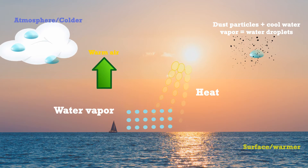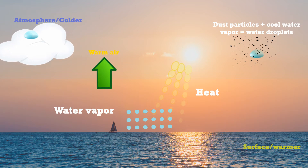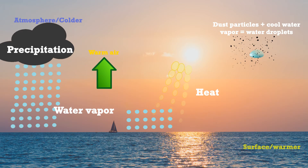When they become heavy enough and the warm air cannot hold them any more, we experience rain, also known as precipitation. Clouds form and move on winds into the rainforest area.